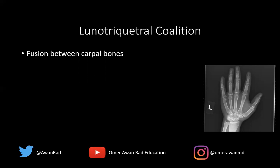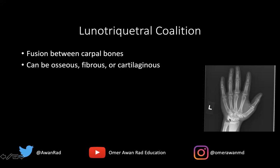We're talking about fusion between carpal bones. Just like in the ankle, this can be osseous, fibrous, or cartilaginous. In this case it's an osseous coalition because we have frank bone bridging both bones together. They can certainly be fibrous or cartilaginous — we often link fibrocartilaginous together because it's very hard on imaging to differentiate a fibrous from a cartilaginous coalition.